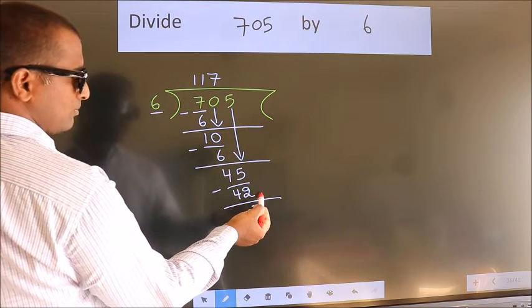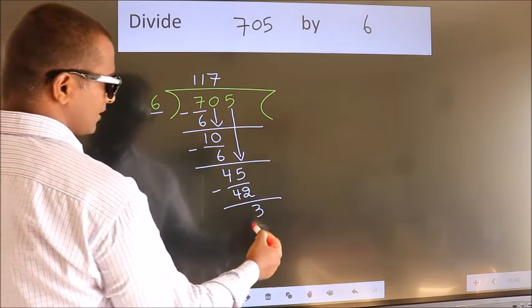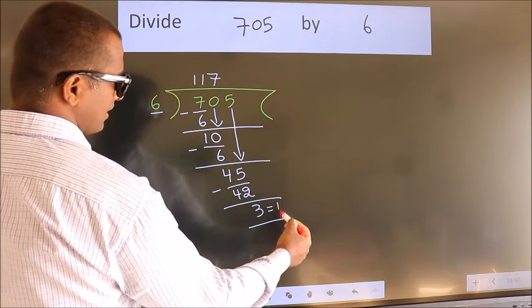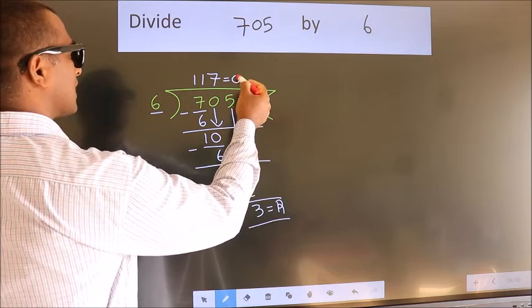No more numbers to bring it down. So we stop here. This is our remainder. This is our quotient.